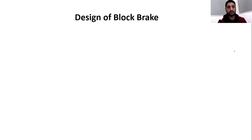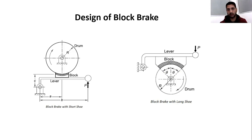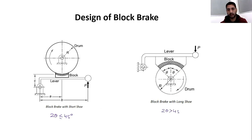We categorize the block brake as block brake with short shoe and block brake with long shoe. As you can see in figure number two, the contact angle between the block and the brake drum is two theta. When two theta is less than or equal to 45 degrees, it is called a block brake with short shoe. When two theta is greater than 45 degrees, it is called a block brake with long shoe.